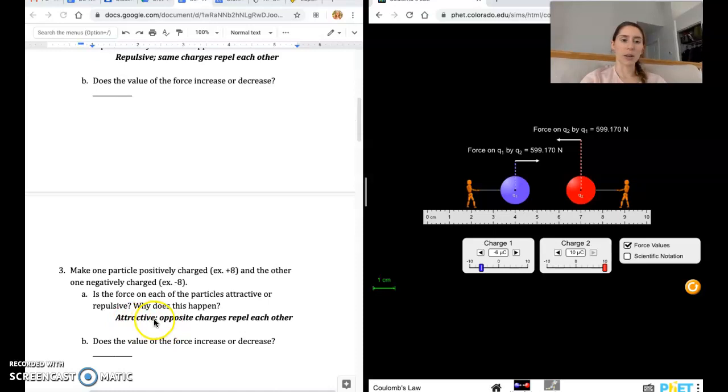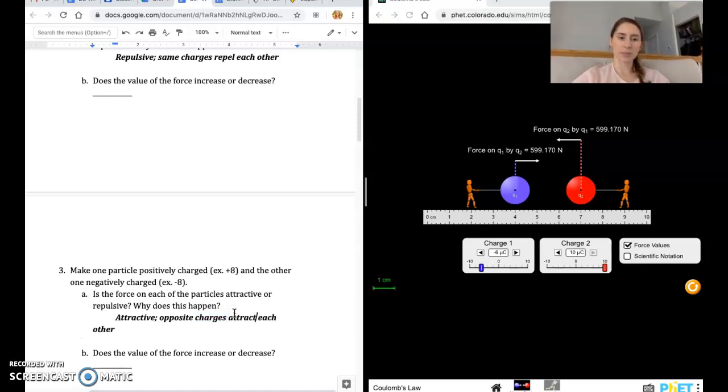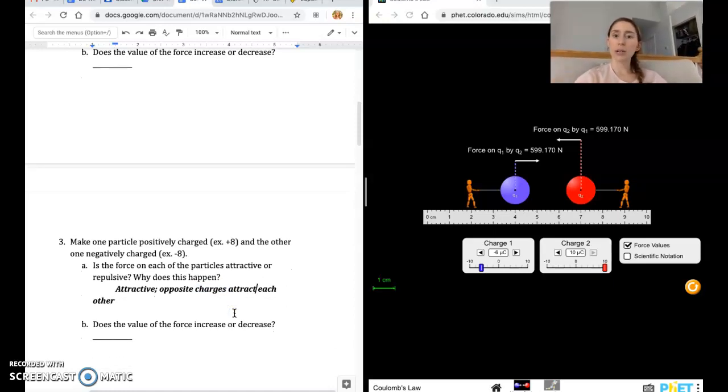So I have the answer here. We see an attractive force. That's because opposite charges attract each other, not repel. And then does the value of the force increase or decrease? From the previous question, it should be the same because the number, the charge number didn't change. It just went from positive to negative.